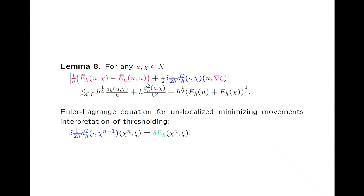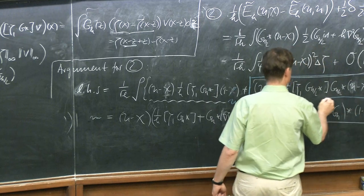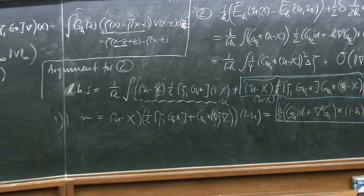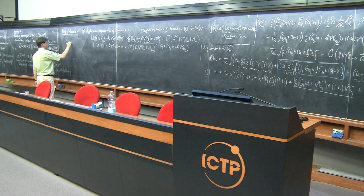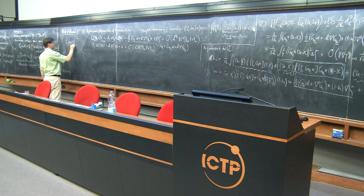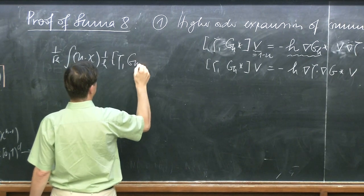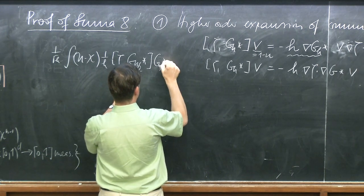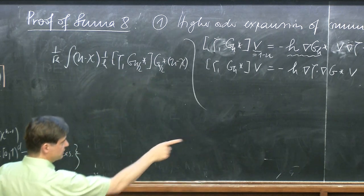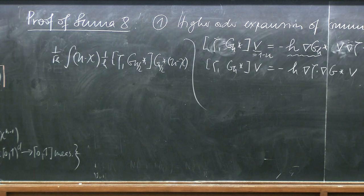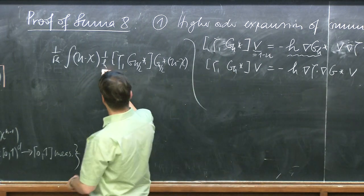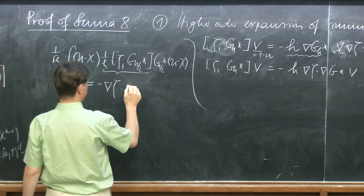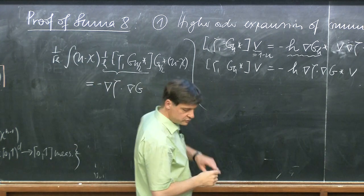We're still left with the remaining term, which is the blue term: one over square root of h, (u minus χ), one over h times the commutator of ζ with g_{h/2} applied to (u minus χ). Let me now use this formula for h/2, substituting h by h/2.